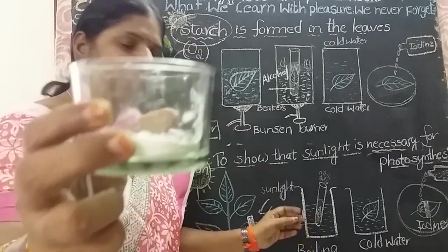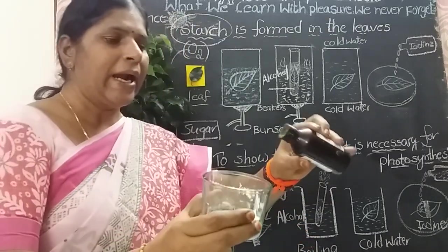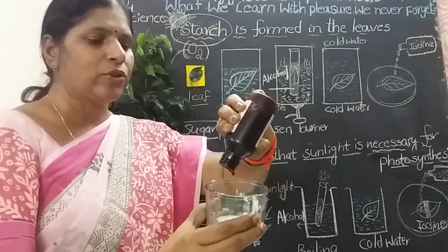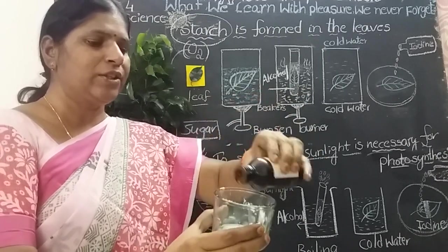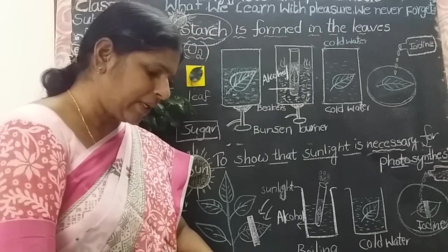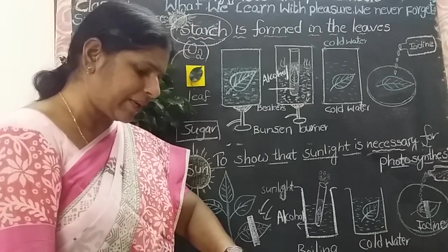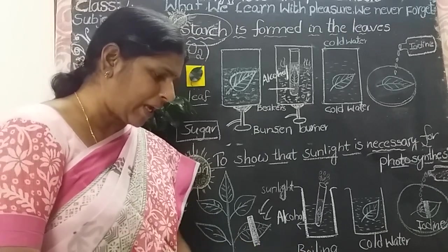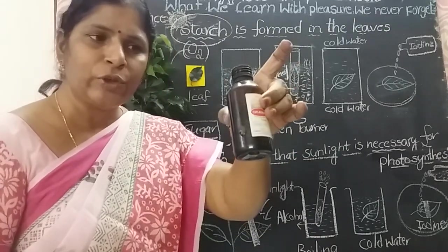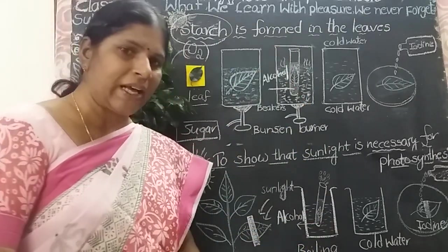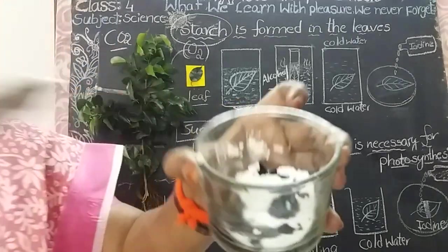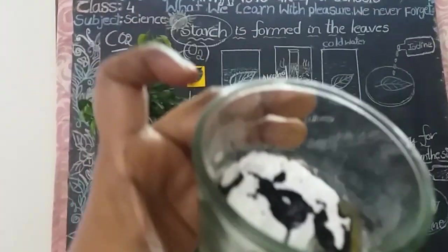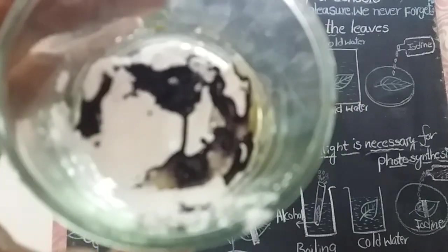Take corn flour — this is the corn flour powder. Add a few drops of iodine solution in it. Immediately, that substance turns into bluish black. See here — this is the iodine solution, and this is the corn flour powder. Immediately, this substance turns into bluish black.